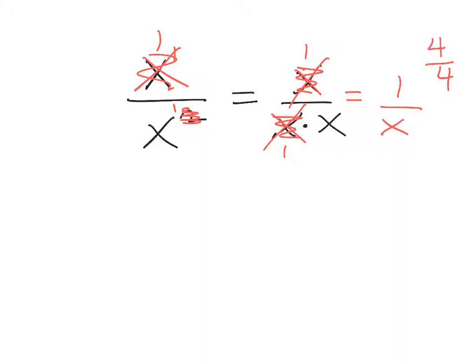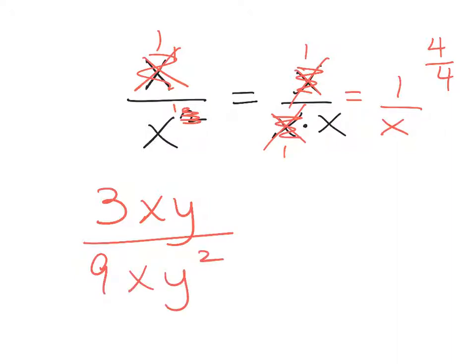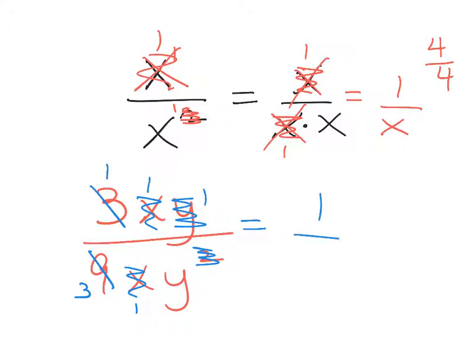Let's try 3xy over 9xy squared. I simplify 3 over 9 to 1 over 3. Then the x's match and become 1s. For the y's, I take away 1 from the exponent of 1 in the numerator and one exponent from the denominator's y squared. Now the numerator is 1 × 1 × 1, and the denominator is 3 × 1 × y, so the simplified fraction is 1 over 3y.